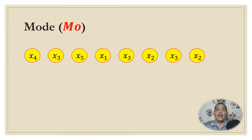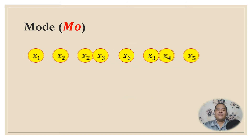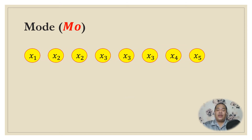Consider the given data set: x₄, x₃, x₅, x₁, x₃, x₂, x₃, x₂. Although x₂ repeats twice, we can identify that x₃ repeats more frequently, making x₃ the mode. If you arrange the data in numerical order, it becomes even easier to identify the mode.